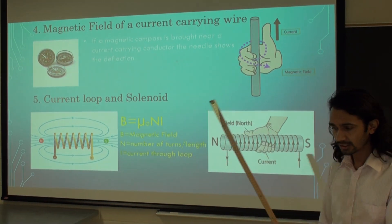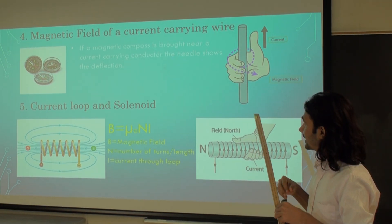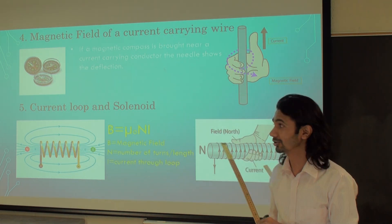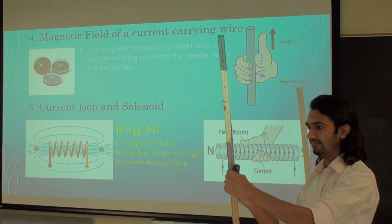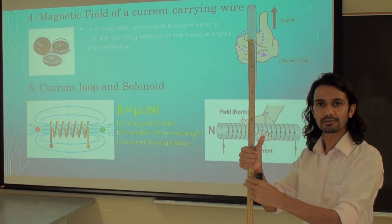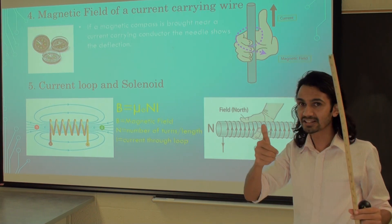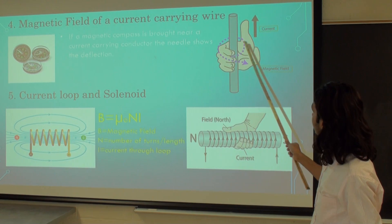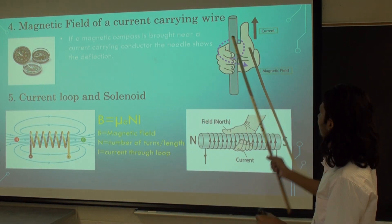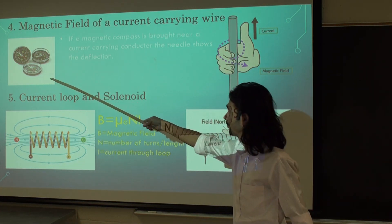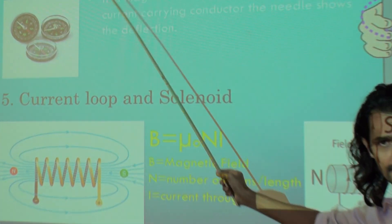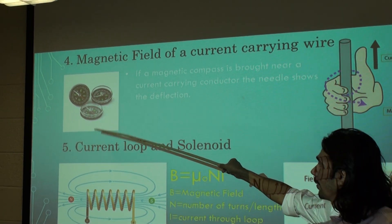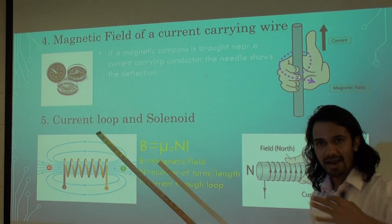The magnetic field exists not only around a magnet but also around a current-carrying conductor. If we have a straight conductor with current flowing from bottom to top, we can hold the wire with the right hand so that the thumb is along the direction of current — then the curled fingers show the direction of the magnetic field. Here I also have pictures of magnetic compasses — small, tiny devices used to determine the poles of a magnet, easily identifying which is the north pole and which is the south pole.